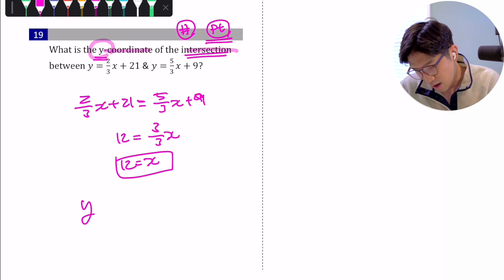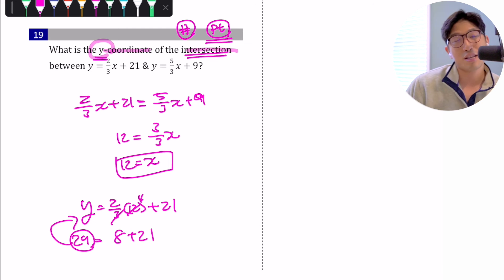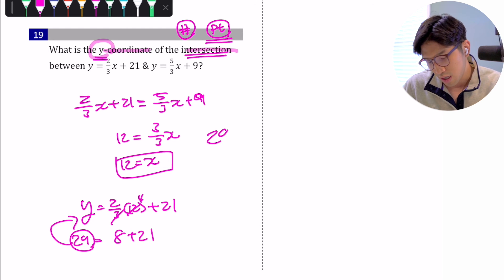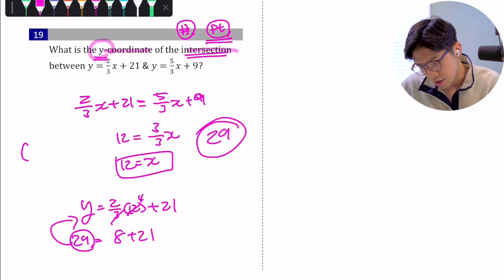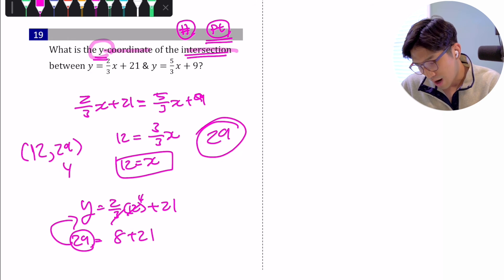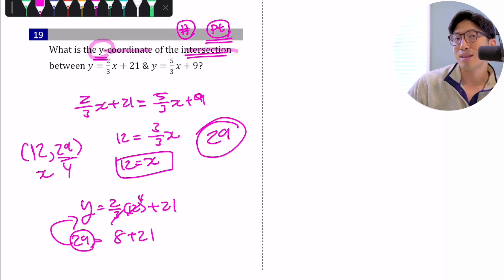Picking one of the equations and plugging in x equals 12: y equals two-thirds times 12 plus 21, which equals 8 plus 21, giving y equals 29. So the y-coordinate at the intersection is 29, and the exact coordinate of the intersection is (12, 29).